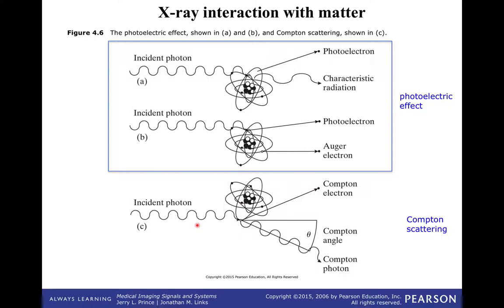If the X-ray goes all the way through the patient, we get a detected event on the other side. If they all went through, you wouldn't have a picture — no contrast. But they don't all go through. What your image is, is a shadow — the differential absorption as a function of position through the patient.